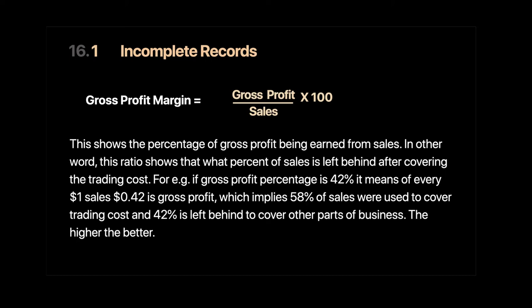We should also introduce some new concepts in incomplete records. I would want to briefly touch upon some ratios. The first one I want to start with is the gross profit margin, which can be defined as gross profit divided by sales, multiplied by 100.